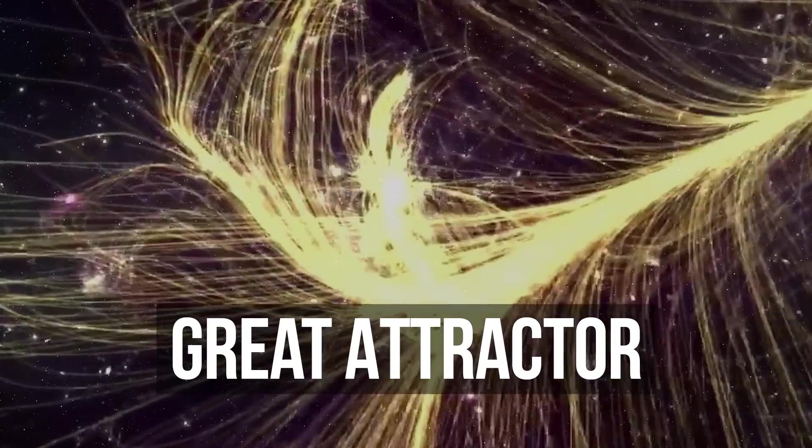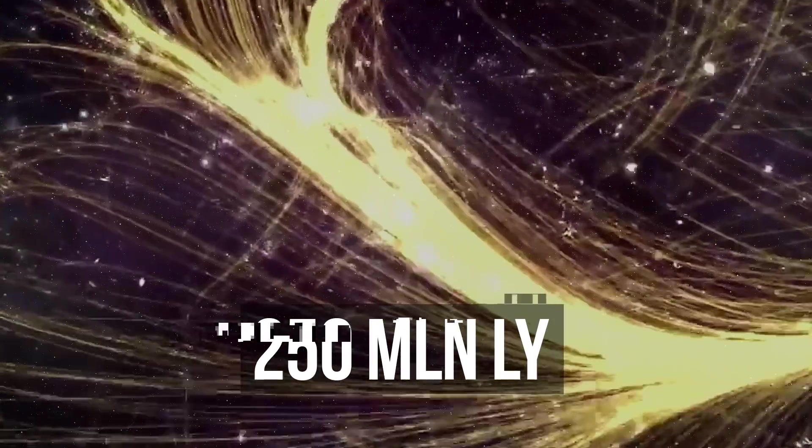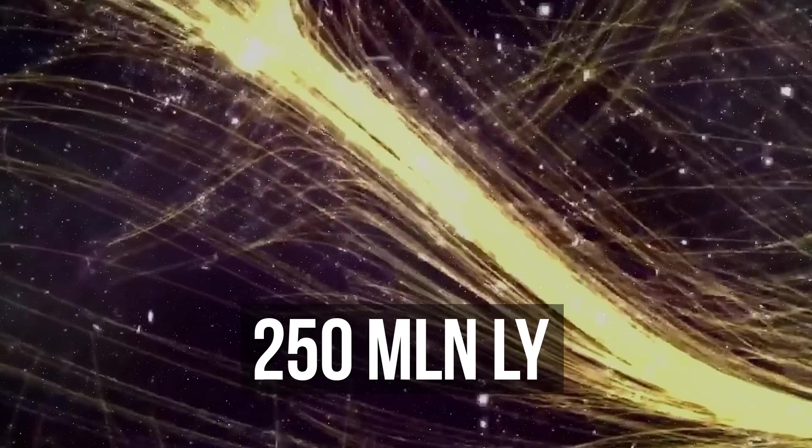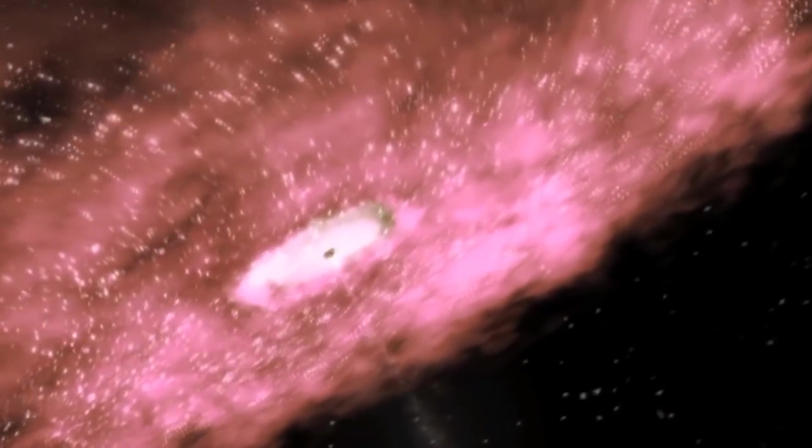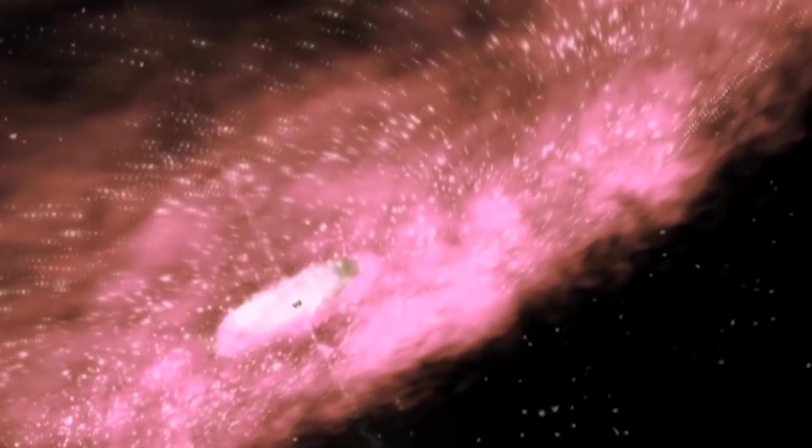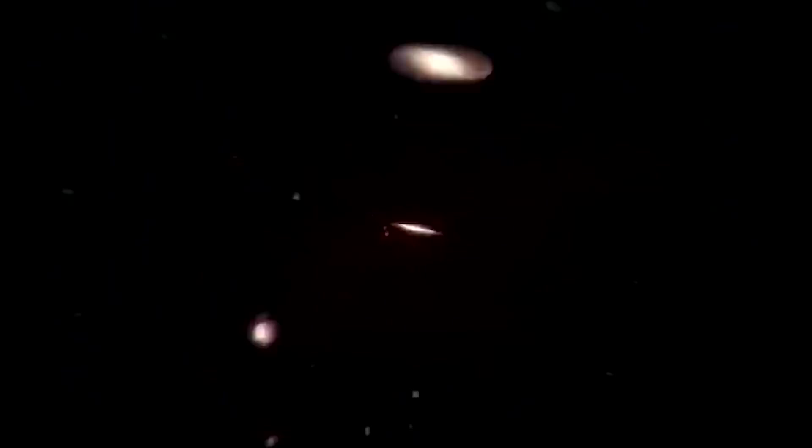The Great Attractor, a gravitational anomaly that lies at a distance of 250 million light-years from Earth. Currently, the disk of the Milky Way completely blocks it from us like a blind wall. The Great Attractor weighs millions of times more than our galaxy, and we're flying towards it at an enormous speed, together with all the galaxies of the Laniakea supercluster.